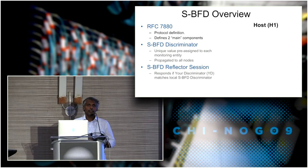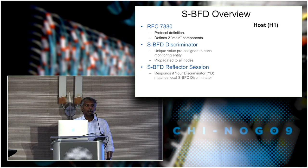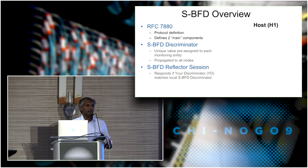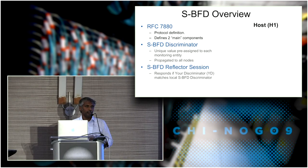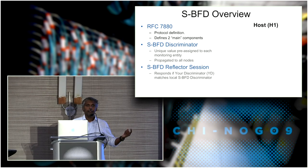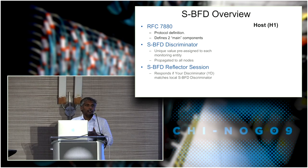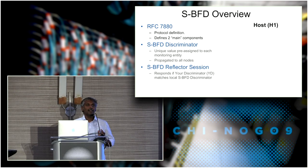Seamless BFD is not a completely new protocol — it's built on top of traditional BFD, reusing as much as possible. For example, the exact same packet format is reused. One difference is the UDP port number: traditional BFD uses port 3784, while seamless BFD uses a different UDP port to differentiate itself, though the packet format is exactly the same.